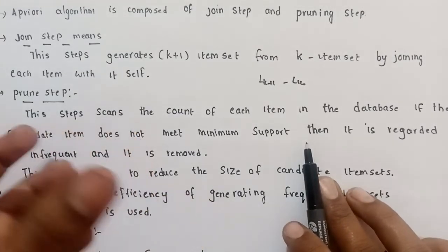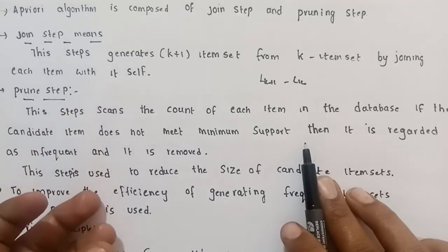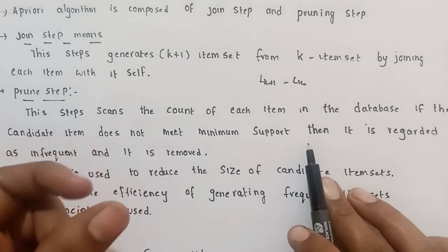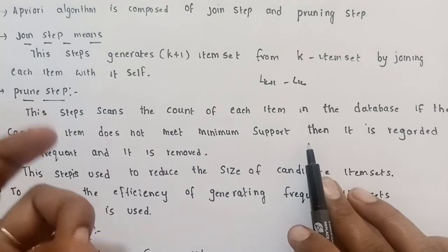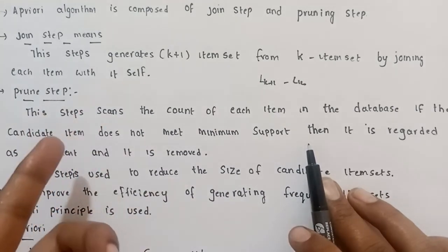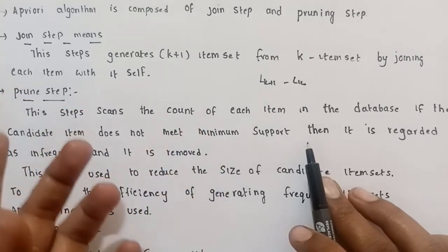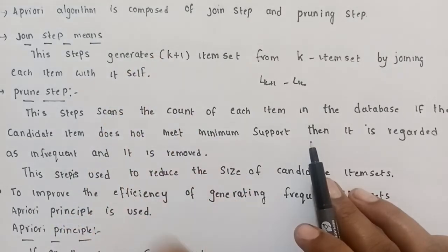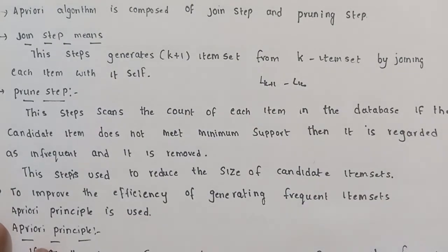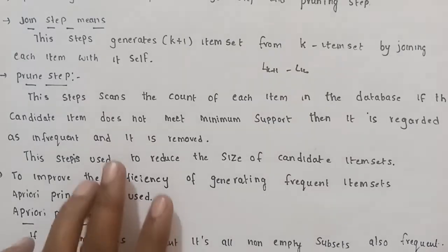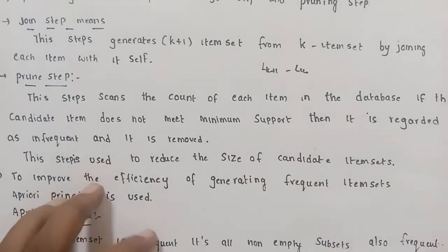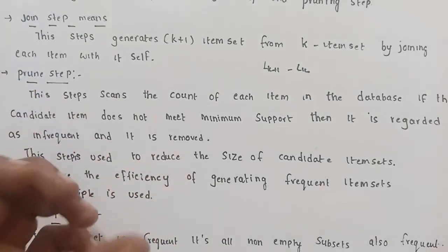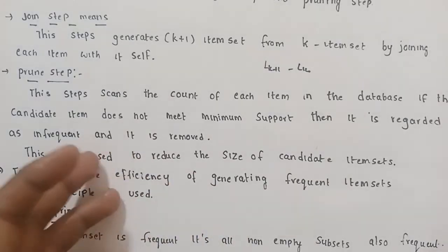We create a candidate item set. This candidate item set is evaluated against the minimum support count. If it does not meet the minimum support count, it will be removed — this is the pruning step. The pruning step is used to reduce the size of the candidate item set. If the minimum support count is satisfied, the candidate item set generates frequent item sets, making the process efficient.